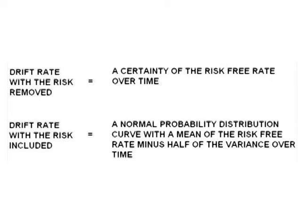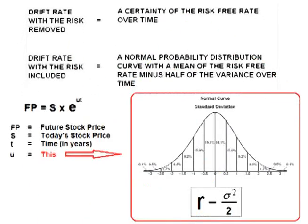We'll cover this more in later videos, but it turns out the rate that volatility erodes is half of the variance over time. Drift rate with the risk removed: a certainty of the risk-free rate over time. Drift rate with the risk included: a probability distribution curve with the mean of the risk-free rate minus half of the variance over time. Return erosion from volatility will be the subject of our next video. See you then.